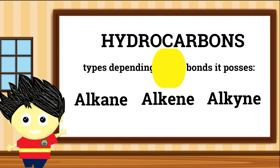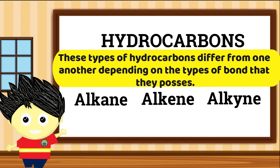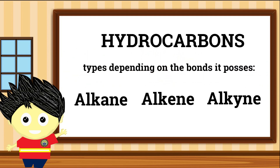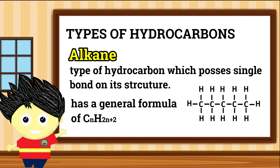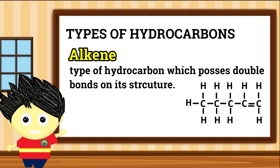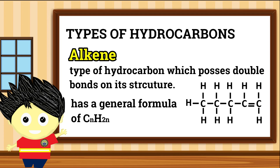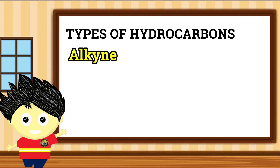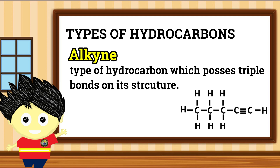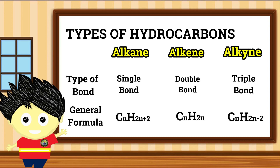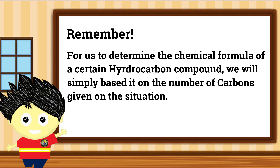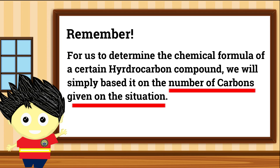Tulad ng ating nabanggit, ang mga ito ay nagkakaiba depende sa types of bonds na mabubuo o magkakaroon sa kanilang structural formula. Isa-isahin natin ang mga ito. Ang alkane ay isang uri ng hydrocarbon na may presensya ng purong single bond. Bukod dito, ito ay may general formula na CnH2n+2. Ang alkene naman ay hydrocarbon na may presensya ng double bonds sa structural formula nito at may general formula na CnH2n. Upang malaman natin ang chemical formula ng isang hydrocarbon compound, ibinabatay natin ito sa given number of carbons sa isang sitwasyon.